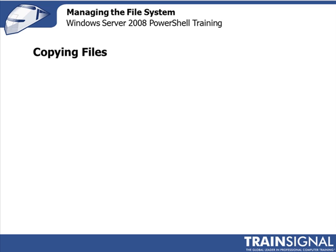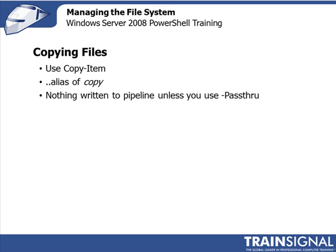So what about copying files in PowerShell? There is the Copy-Item cmdlet, or we can just use the alias of copy. The syntax is very much what you are probably used to in copying files in the CMD shell. One thing to remember, though, about Copy-Item is nothing is written to the pipeline, unless you use -PassThrough. So you can run Copy-Item, but you won't see anything back to your prompt unless you use that common parameter.